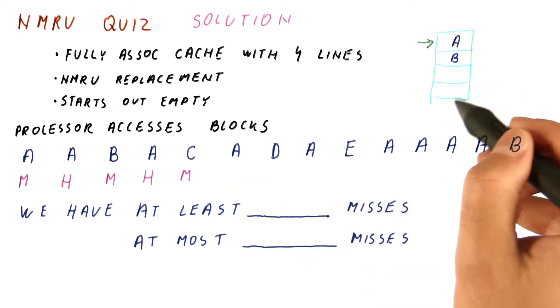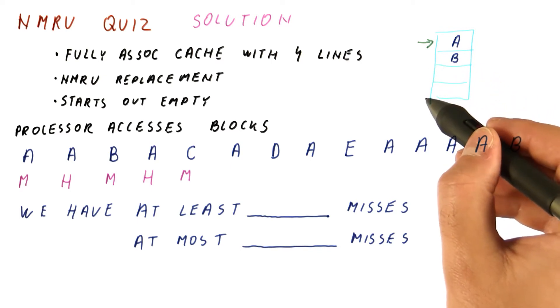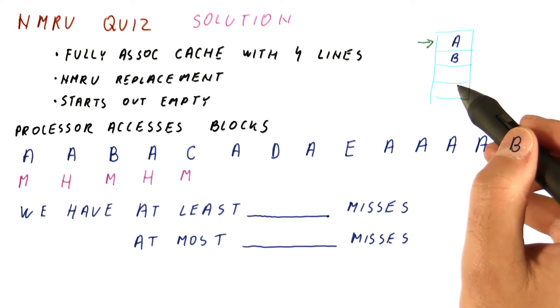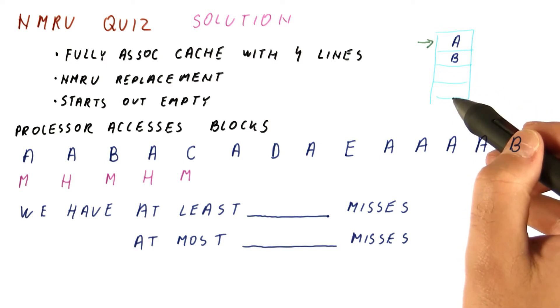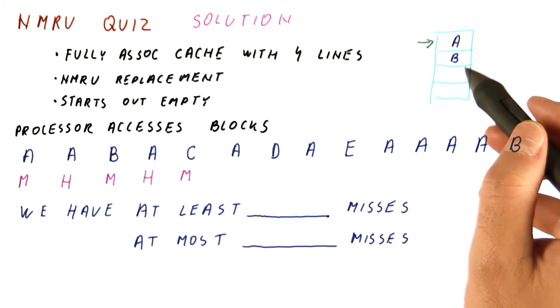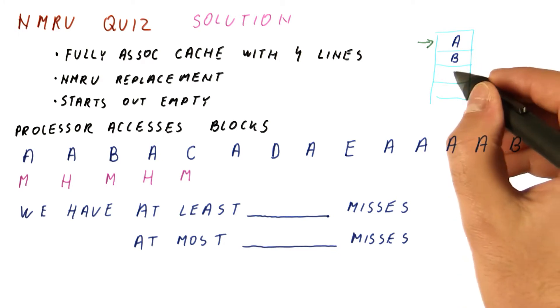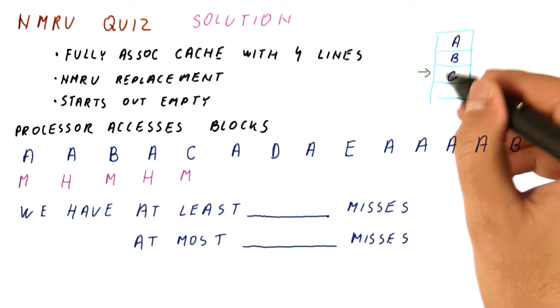In this type of a situation, it looks like B might actually be evicted. But remember that we also have valid bits for all these blocks. So when we have a replacement policy, typically we will first fill all the lines in the cache set before we move on and start evicting something. So we will put C into one of the empty slots. And now that is the most recently accessed line.